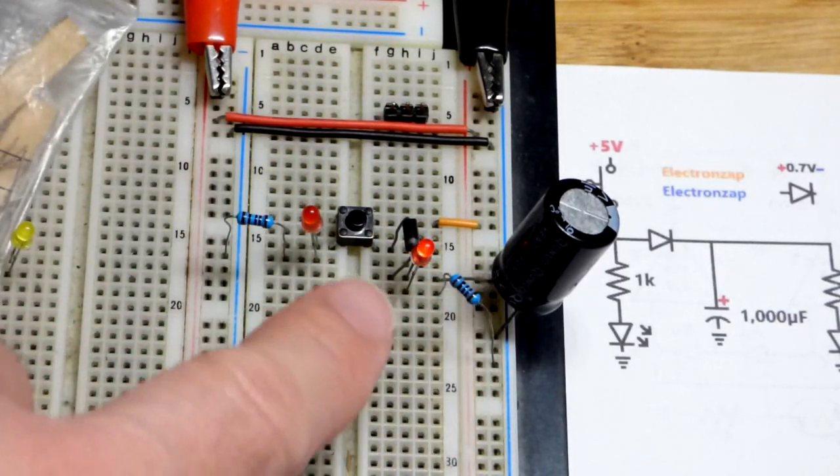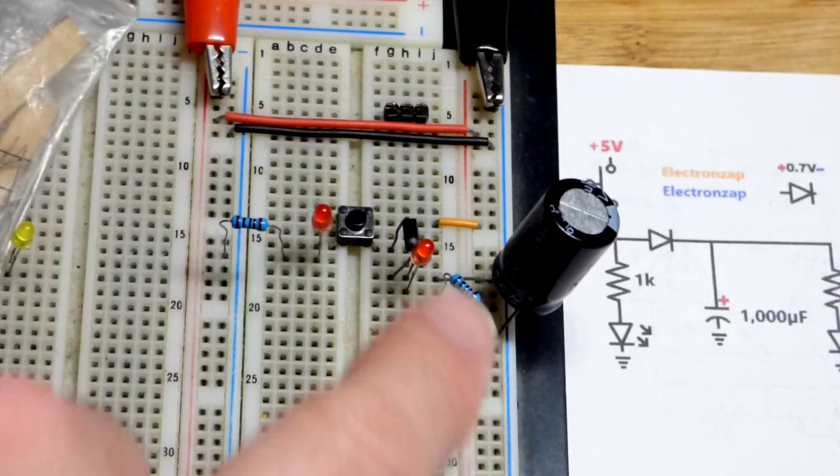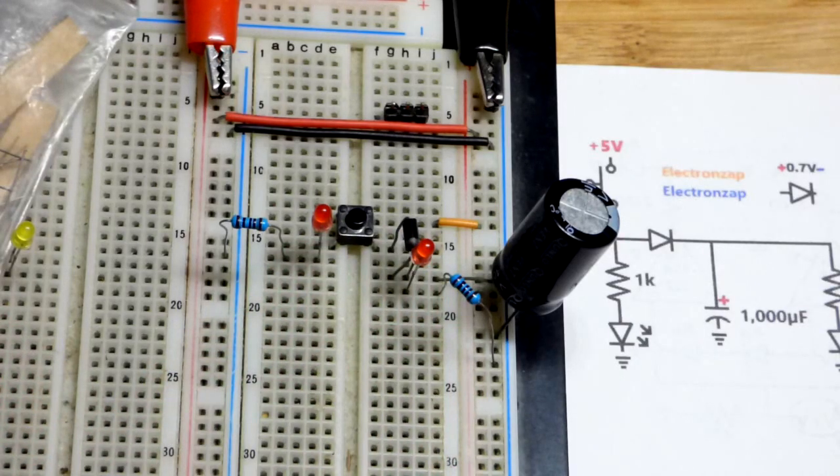But when I release the button, now the capacitor will not help light the other LED. It only has this LED it can pass current through. So we separated the two circuits.